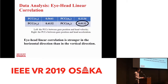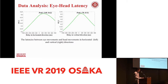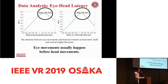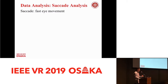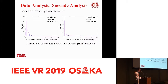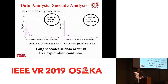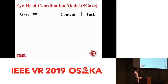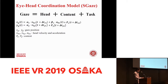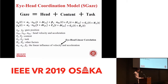We further calculate a series of PCCs between eye movements and head movements, and find that eye movements usually happen before head movements. We also analyze saccades — fast eye movements — and find that long saccades seldom occur in free exploration conditions. Prior works on gaze prediction only consider the influence of content and task. However, based on our analysis, we argue that head movements should also be considered. Therefore, we propose an eye-head coordination model called S-Gaze, which considers gaze behavior as a combined influence of head movements, content, tasks, and other factors. When modeling head movements, we take eye-head linear correlation and eye-head latency into consideration.